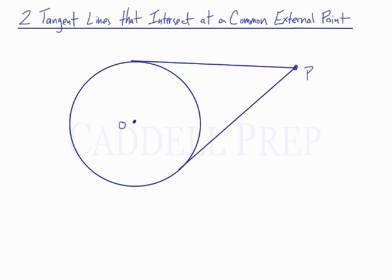What's important about these is that these are both congruent to each other. So let's say this point here where it intersects the circle is A, and here where it's tangent is B. So we have AP is congruent to BP.